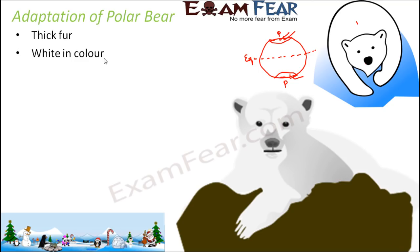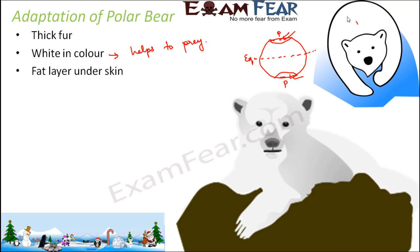The white color not only provides protection but also helps polar bears catch their prey. If they are hidden in the white snow, other animals cannot recognize their presence or see them, making it easier for the polar bears to catch their prey.